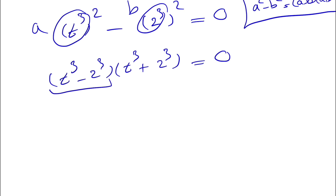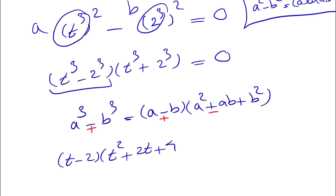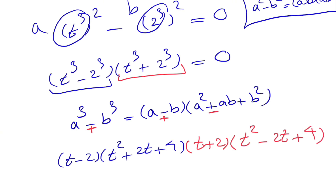Now we apply the difference of two cubes: a cubed minus b cubed equals a minus b times a squared plus ab plus b squared. For the sum of cubes, the signs are flipped — positive in one place and negative in the other. Using different colors to distinguish them: t cubed minus 2 cubed becomes t minus 2, times t squared plus 2t plus 4. And t cubed plus 2 cubed becomes t plus 2, times t squared minus 2t plus 4.